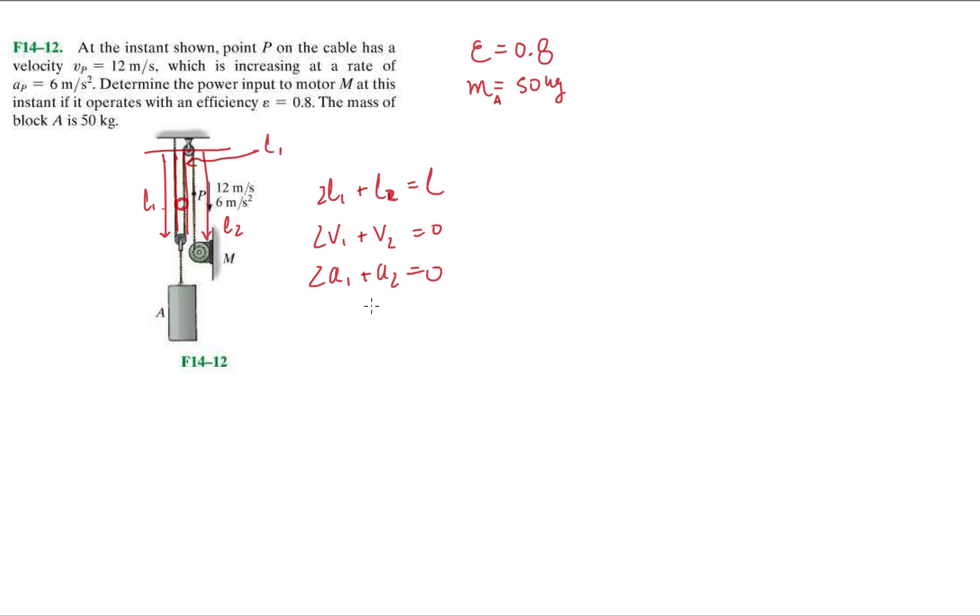This tells me the relationship between the accelerations of the cables on the first pulley and the little pulley, and then the acceleration that we're given at point P, which is 6 meters per second going down. When we isolate A1, we're going to get minus A2 divided by two.